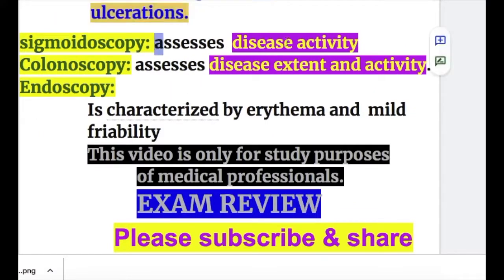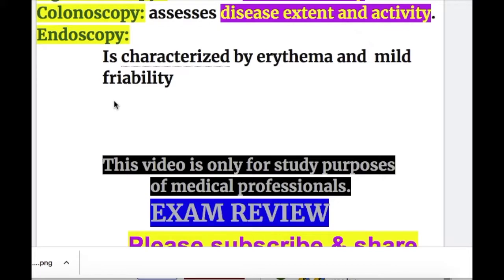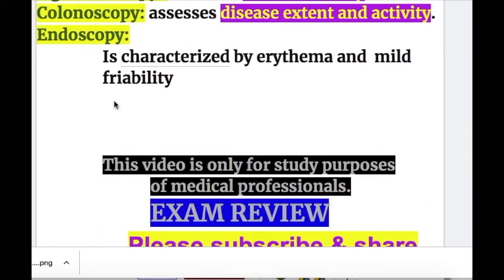Sigmoidoscopy assesses disease activity and colonoscopy assesses the extent and activity. Endoscopy is characterized by erythema and mild friability; in severe cases it shows spontaneous bleeding and ulceration. CT scan and MRI are not as helpful as endoscopy, but typical features include mild mural thickening less than 1.5 cm, absence of small bowel thickening, increased perirectal and perisacral fat, and adenopathy.